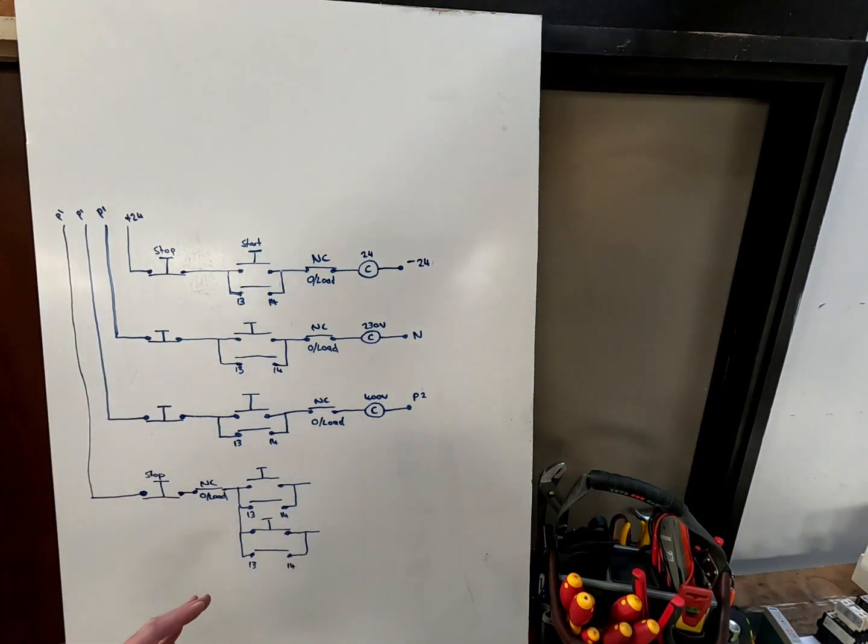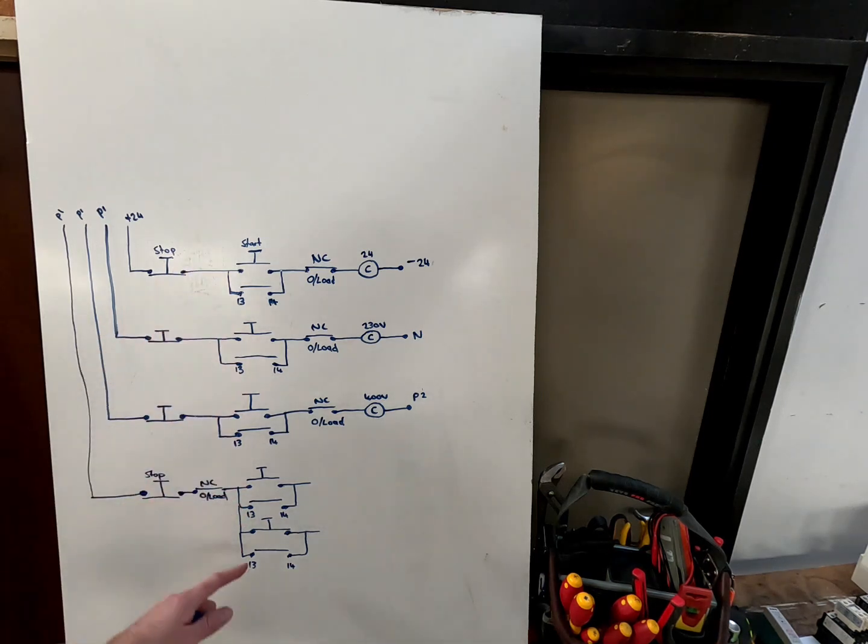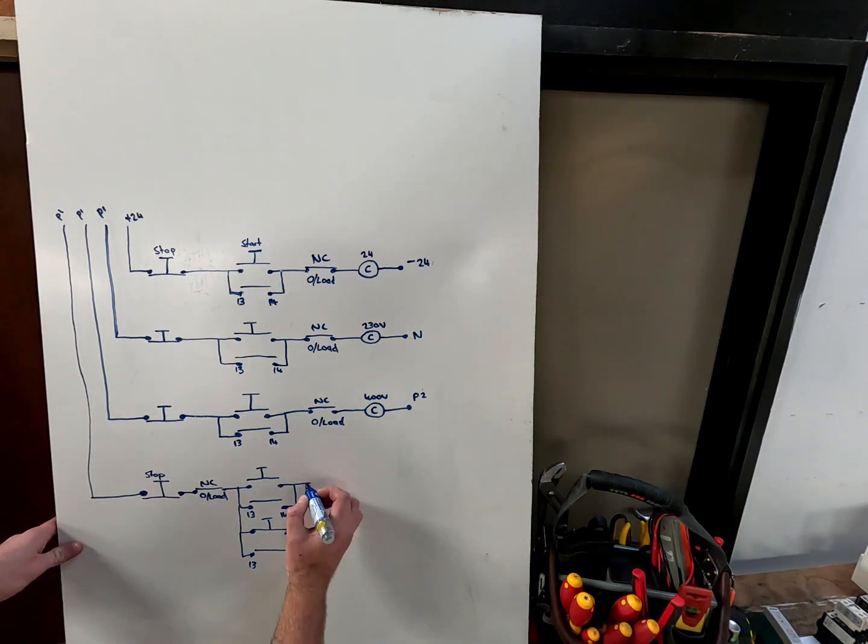Currently the way we have it is if you press this button, obviously power will carry on here and it will hold in this contactor, just like normal and same here. The only difference between this one and this one is this one will just have the three phases differently so that the motor goes the opposite way.